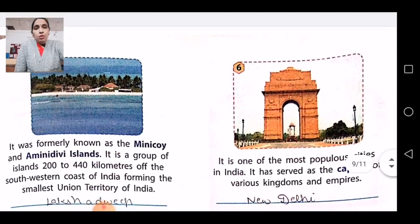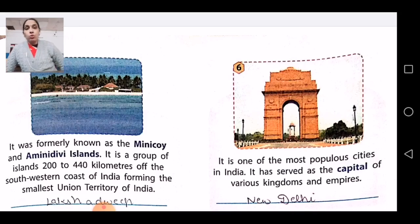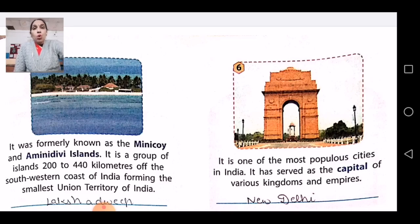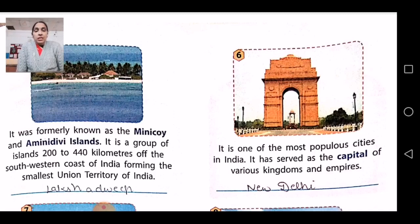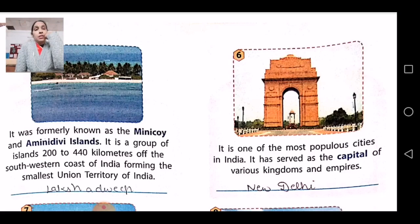The fifth picture: it was formerly known as the Minikoi and Aminidivi Islands. It is a group of islands about 200 to 440 kilometers off the southwestern coast of India, forming the smallest union territory. That is Lakshadweep — the smallest union territory, occupying about 200 to 440 kilometers of the southwestern coast of India. Its formerly known name is Minikoi or Aminidivi Islands.